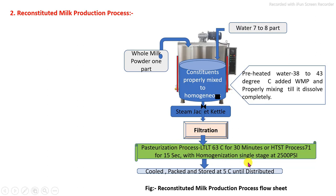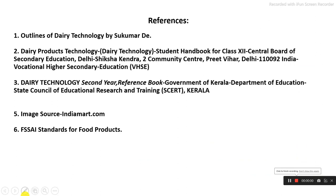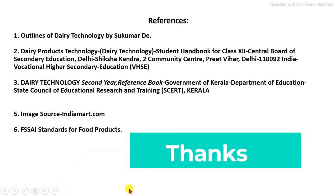Then the pasteurization and homogenization process is carried out, using either low temperature longer time or high temperature short time, with single stage homogenization in between. After that, the product is directly packed into packaging material and stored under refrigeration until end use. This video discussed what is meant by recombined milk and reconstituted milk, their basic production processes, and the equipments required. Thank you very much.